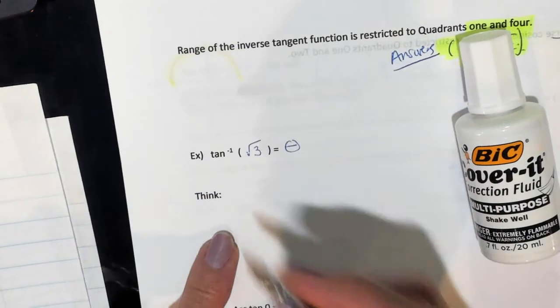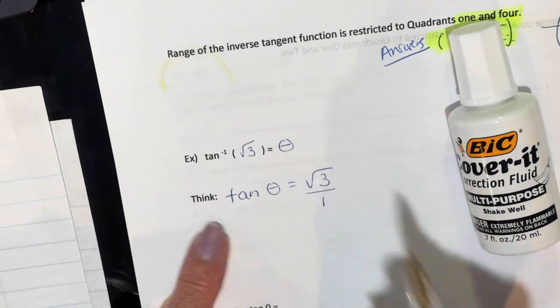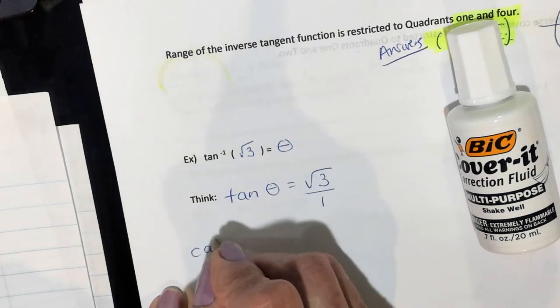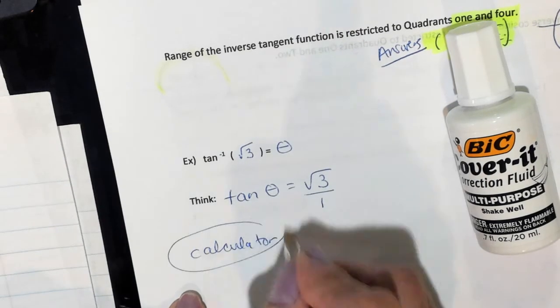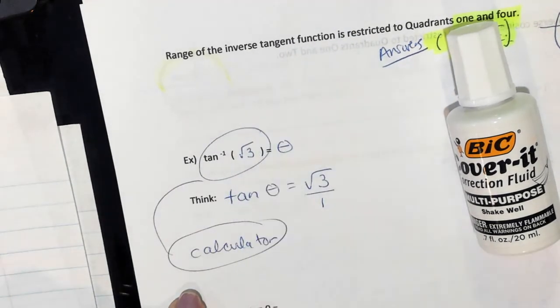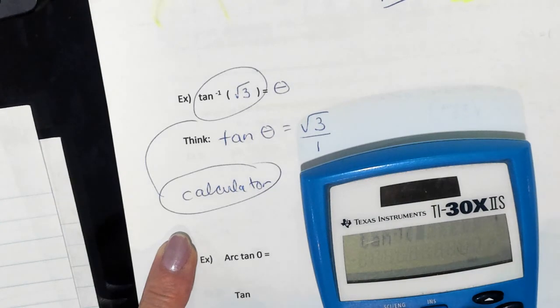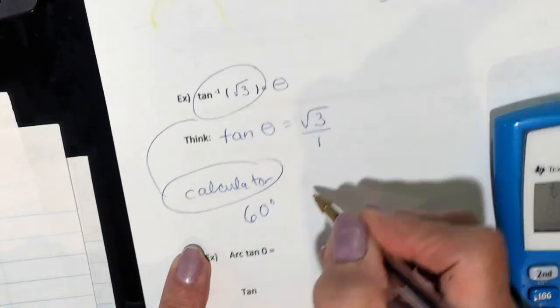Inverse tangent of the square root of 3 equals theta. This means the tangent of what equals root 3 — you can write it as root 3 over 1 if you'd like. Let's get out our calculators since tangent is not on our unit circle. Inverse tan of square root of 3 gives 60 degrees. In radians, that would be pi over 3.